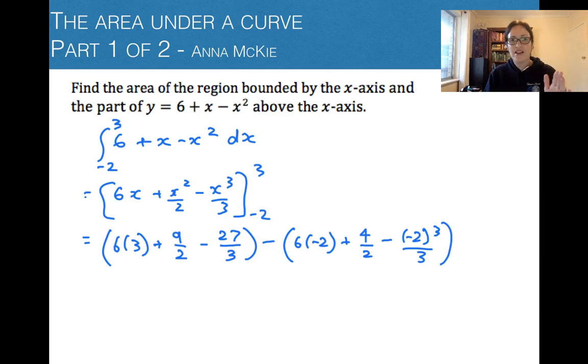You can put that into your calculator, but it's good practice to do it by hand. 6 times 3 is 18 plus 4.5 take away 9, and we've got -12 + 2, that will be positive 8/3.